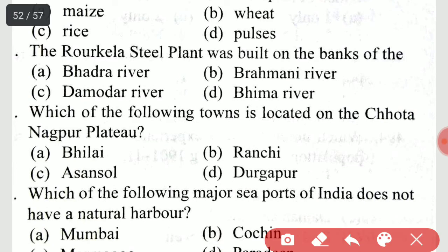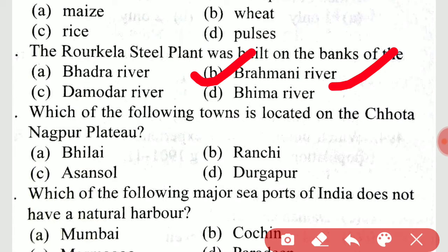The Rourkela steel plant was built on the banks of which river? The Rourkela steel plant is built on the banks of the Brahmani River.